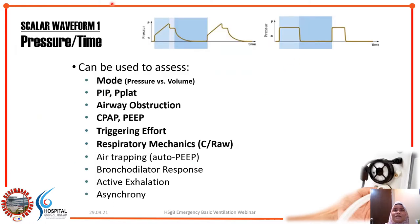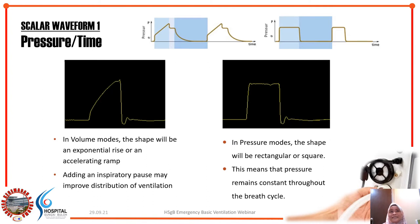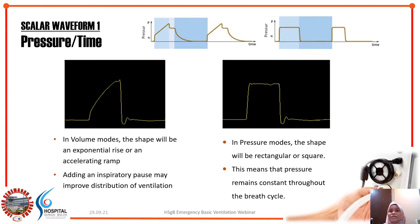What information can you get from the pressure against time curve? For beginners, we'll go through the first six points. First, the shape of the pressure-time waveform is the easiest way to determine whether the patient is on volume mode or pressure mode. In volume mode the shape will be an exponential rise or accelerating ramp, whereas in pressure mode the shape will be rectangular or square, meaning pressure remains constant throughout the breath cycle.